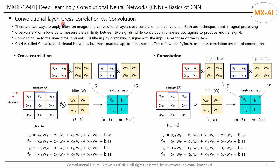There are two ways to apply filters on images in a convolutional layer: cross-correlation and convolution. Both are techniques used in signal processing. Cross-correlation measures the similarity between two signals, while convolution combines two signals to produce another signal. Cross-correlation is computed as follows: given an image X with N rows and M columns, and a filter W with I rows and K columns, we apply the filter W to a sub-image of X, compute the element-wise product, and sum them all up to get the first pixel value of the feature map.